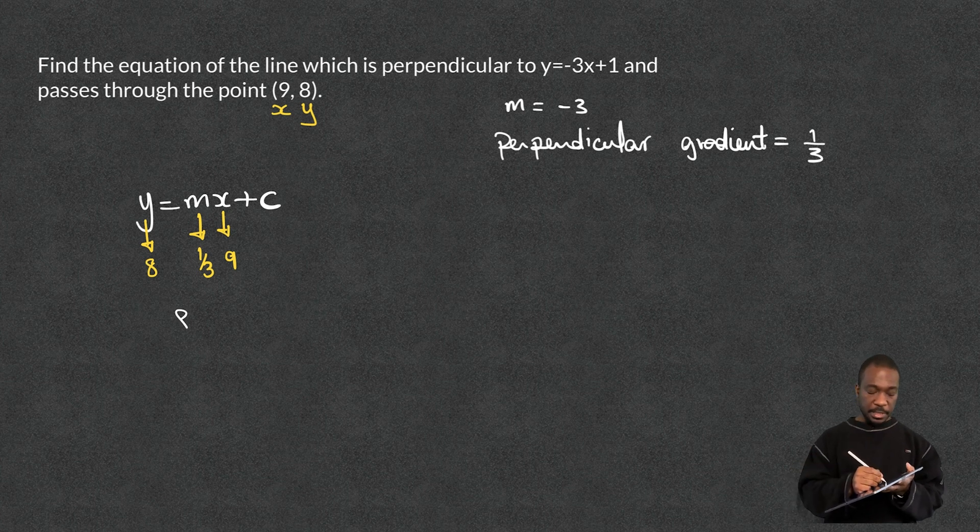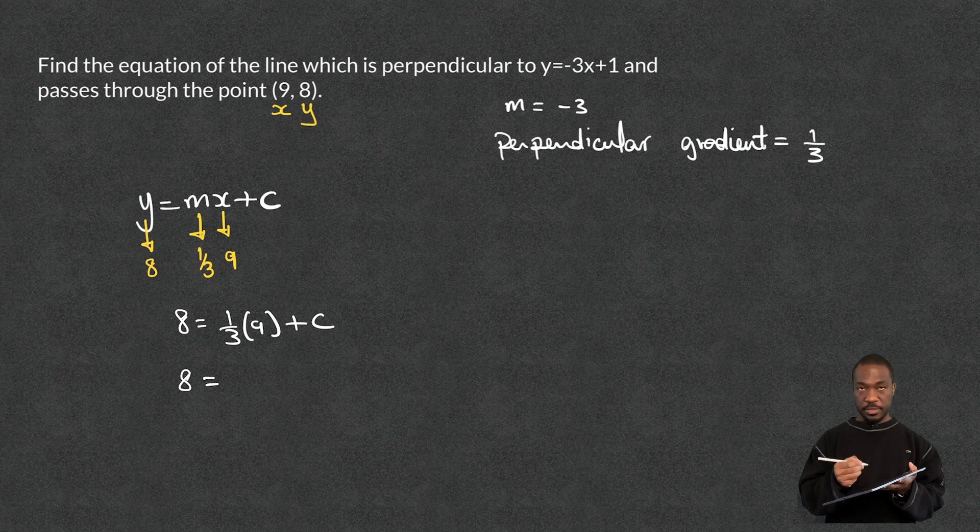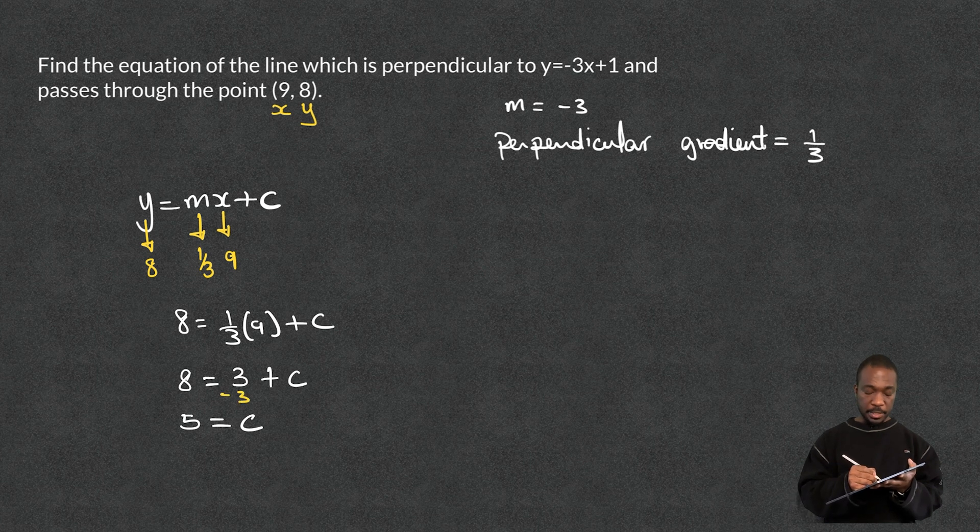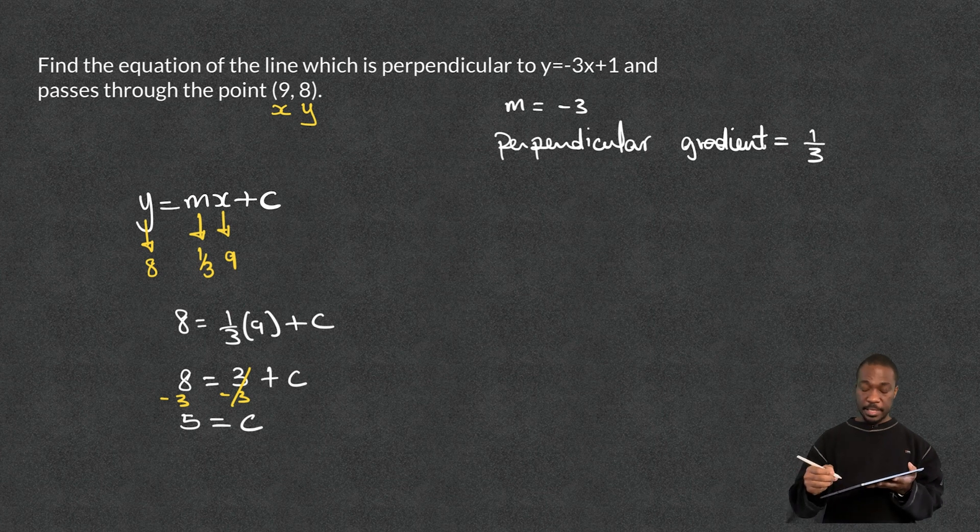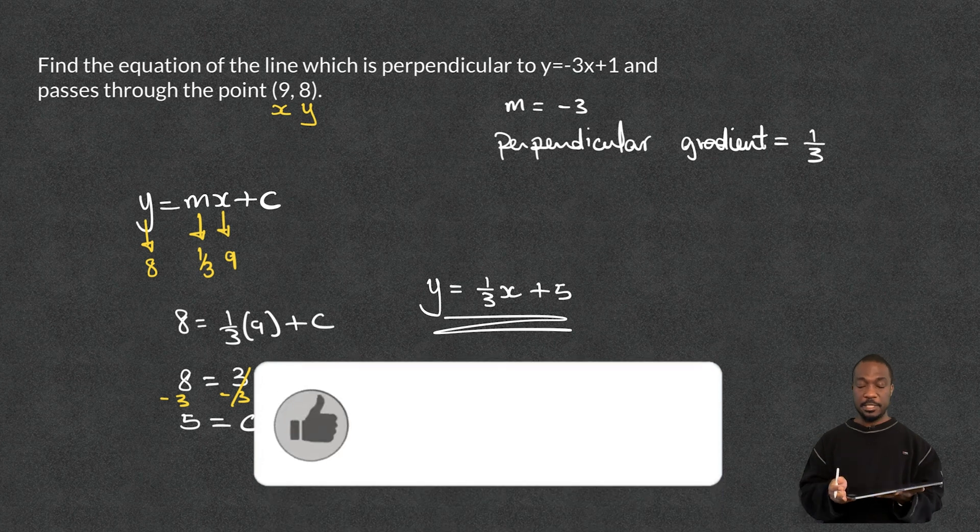So it means that 8 is equal to a third times 9 plus c, which means it's 8 equals a third of 9 is 3, add c. I take away that 3 from both sides. So 5 is equal to c. I'm just going to put a little note to say that I'm taking away 3 from both sides. So that's going to be equal to 5. Now that I have that, the equation of this perpendicular line is y equals a third x add 5. And this is finished.